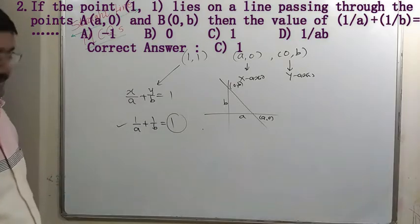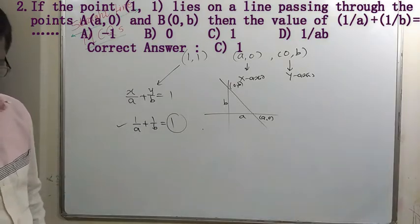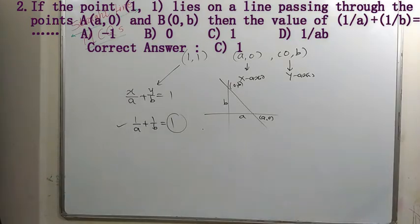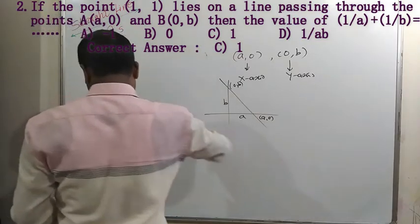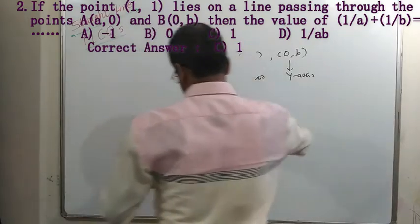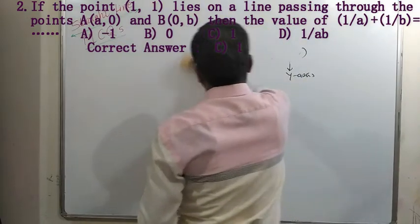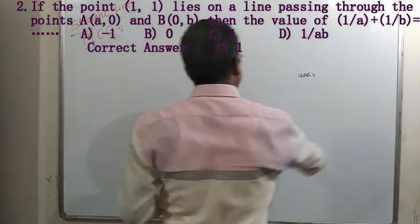Since the line passes through (1, 1), substituting x = 1 and y = 1 into the equation gives 1/a + 1/b = 1. So the answer is 1/a + 1/b = 1. This is a very simple example.